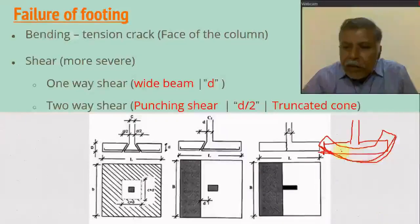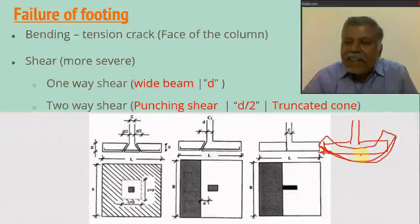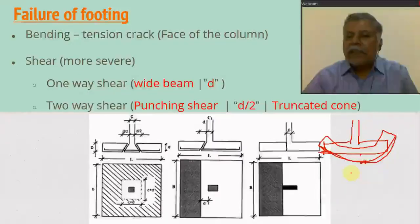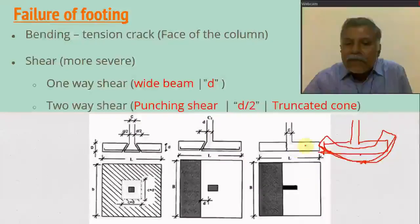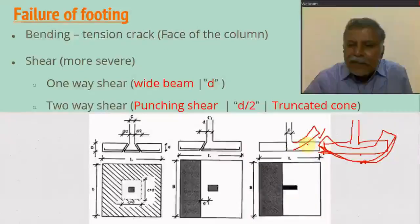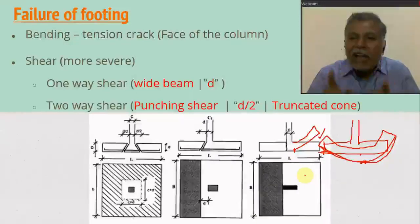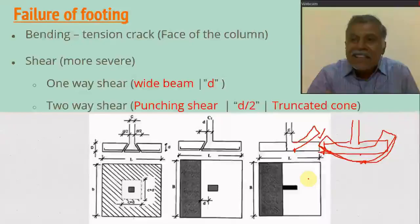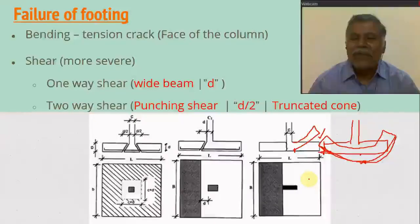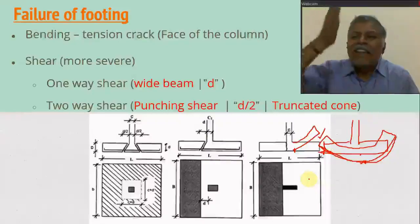Due to the tensile force, the bottom fiber elongates more, indicating tension at the bottom. This causes cracks. The footing acts like a cantilever — the end is free and the column end is supported. Tension cracks occur at the column face at the bottom surface, so the critical section for bending is at the face of the column.